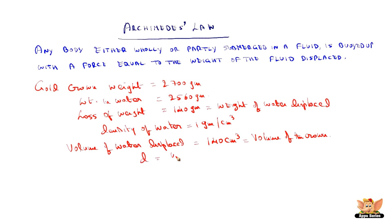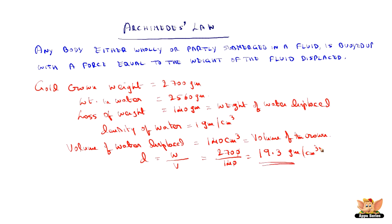When we measure the density — density is weight by volume — the actual weight of the crown is 2700 grams and the volume is 140 centimeter cube. When calculated, we get 19.3 grams per centimeter cube. The density of the crown happens to be 19.3 grams per centimeter cube. This happened to be the density of gold. Hence, Archimedes could surely say that the goldsmith is an honest man and this crown is made of pure gold.